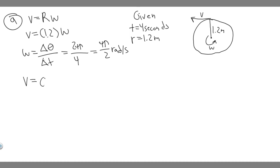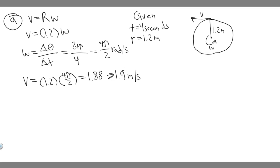Now we can plug in: linear speed V equals 1.2 times pi over 2. Calculating that gives 1.88, which I'll round to 1.9 meters per second. The units work out because the radius is in meters and time is in seconds — radians are dimensionless — so the result is meters per second. That's the answer to part A: 1.9 m/s.